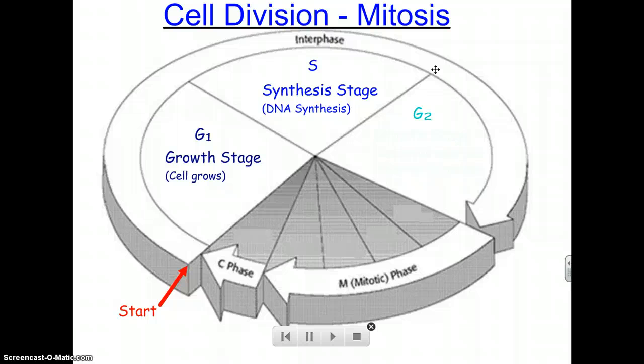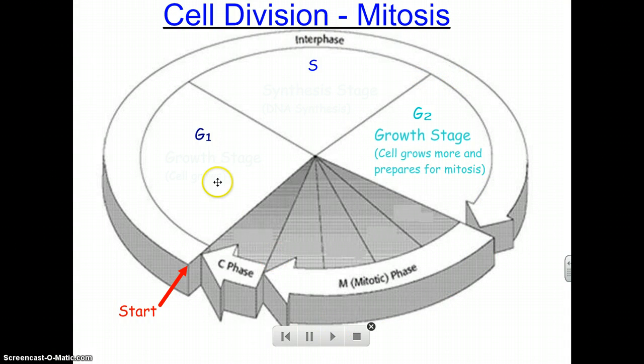Now the cell is growing and getting ready to split into two identical baby cells. So we went from one baby cell, it grew, copied its DNA, grew some more. Now it's getting ready to split to make two more baby cells. It's beautiful. After G2, growth stage two, the cell grows more and prepares for mitosis.